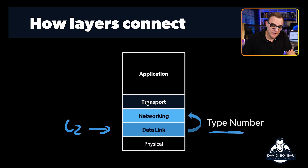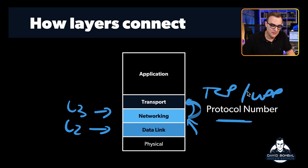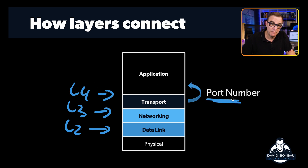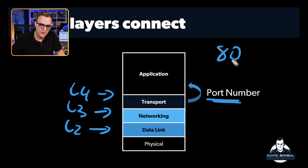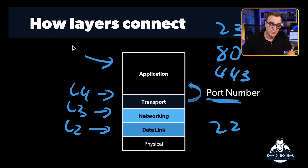At layer two, we use the type number to determine the protocol at layer three. At layer three, the protocol number determines which protocol is being used at layer four — is it TCP or UDP? At layer four, we determine the application by the port number. Famous port numbers include port 80 for HTTP, port 443 for HTTPS or TLS, port 23 for Telnet, and port 22 for SSH. These port numbers denote well-known applications listening on a specific port. If I enable an HTTP server, it listens on port 80 by default, but I could configure it to use 8080 instead.